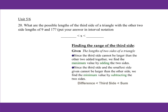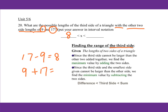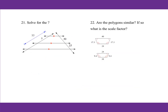For number 20, what are the possible lengths of the third side of a triangle with the other two side lengths of 9 and 17? To find the range of the third side, find the difference: 17 minus 9 equals 8. Then find the sum: 9 plus 17 equals 26. The rule is: the difference must be less than the third side, which must be less than the sum. So 8 < third side < 26.